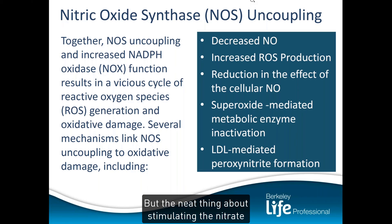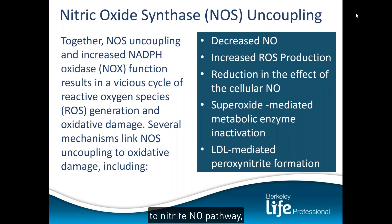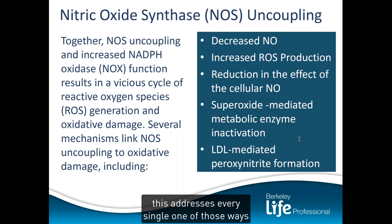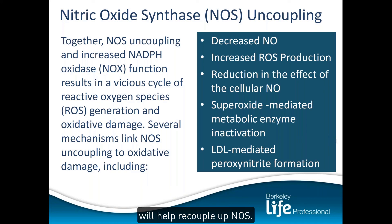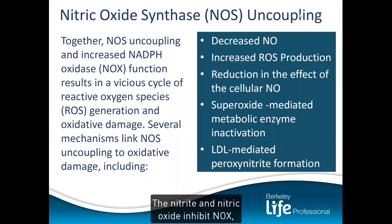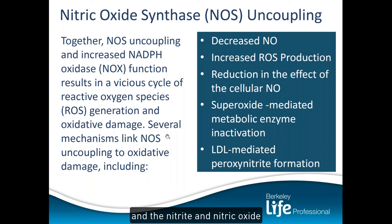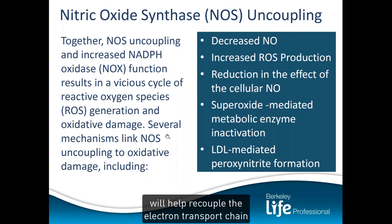The neat thing about stimulating the nitrate-to-nitrite-to-nitric oxide pathway is that it addresses every single one of those ways we make superoxide. The nitrate, nitrite, and nitric oxide will help recouple NOS. The nitrite and nitric oxide inhibit NOX. And the nitrite and nitric oxide will help recouple the electron transport chain to decrease the production of superoxide.